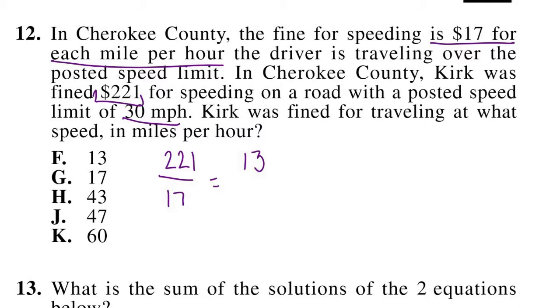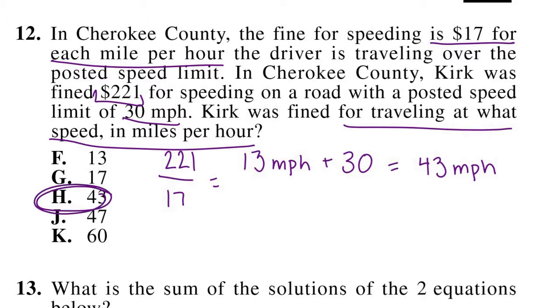Well, 221 divided by 17 that is 13. So we know that he was driving 13 miles per hour over the speed limit. It might be tempting here to look at your answers and say well F is 13, but our question is not asking how fast over the speed limit he was driving. It's asking at what speed was he traveling in miles per hour? So he was fined for traveling 13 miles over the speed limit which is 30. So we do 13 plus 30 which gives us 43 miles per hour and that matches our answer choice H of 43. So our answer to number 12 is H.